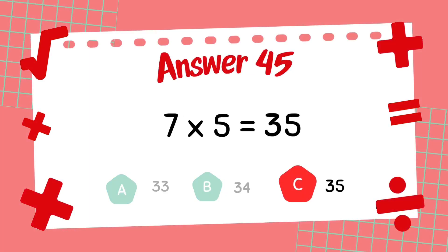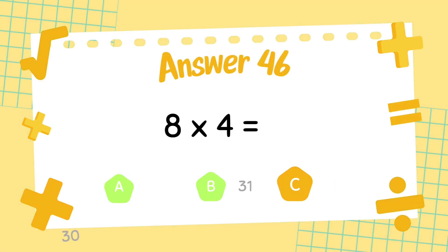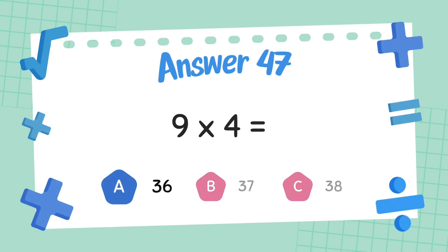What is 8 multiply 4? The answer is 32. What is 9 multiply 4? The answer is 36.